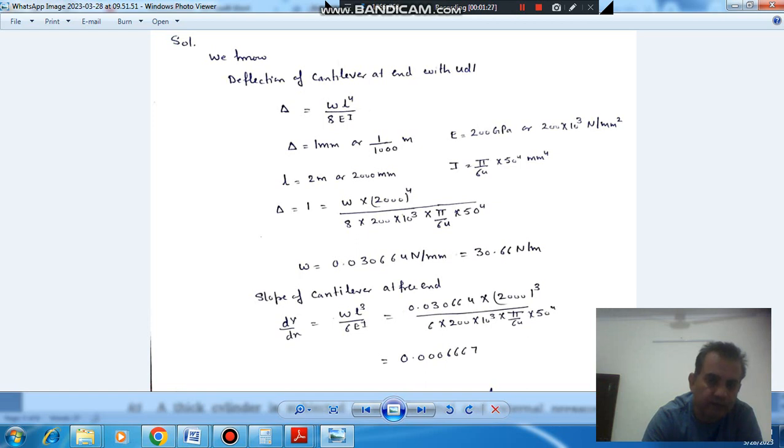And I is, diameter is given as 50 mm, so I is pi by 64 into 50 to the power 4. Now putting the values, we can get W. So the W will come out as Newton per mm.